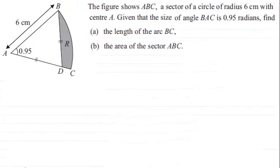Hi. Now, in this example, we're told that we've got this figure ABC, which is a sector of a circle of radius 6 cm with centre at A. Given that the size of angle BAC is 0.95 radians, we've got to find the length of the arc BC and the area of the sector ABC.